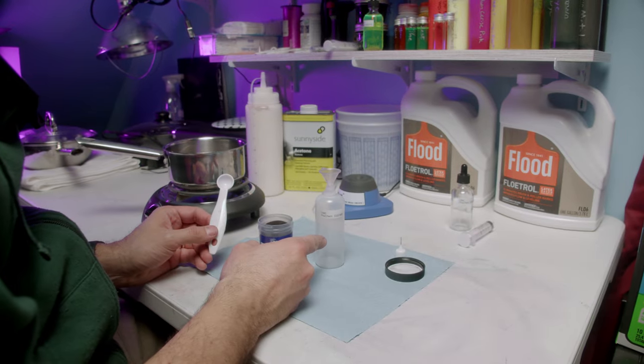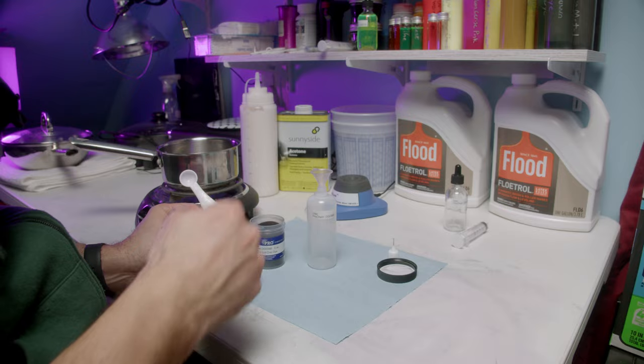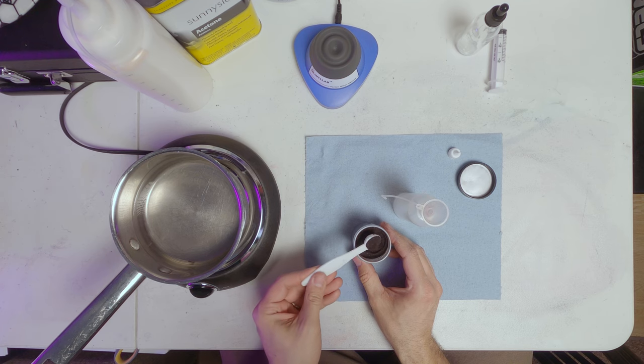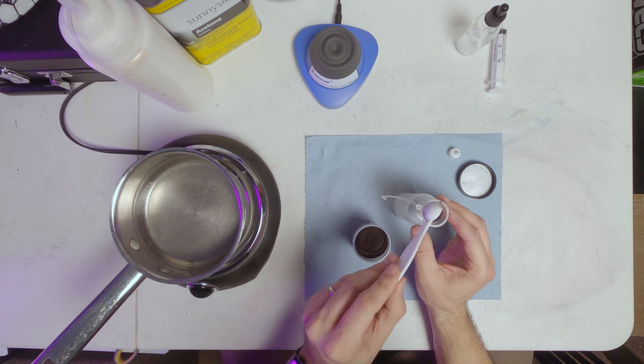This bottle is four ounces and I am going to put one tablespoon of dye in here. Scoop the dye. This is a half teaspoon measuring. So I'm going to carefully put that in there.